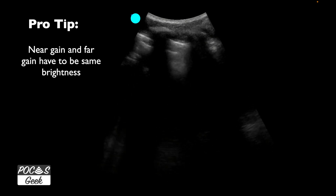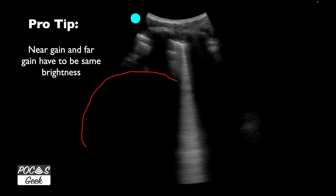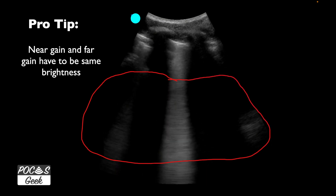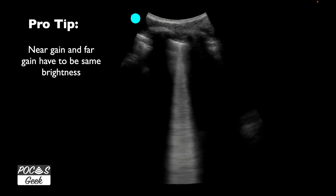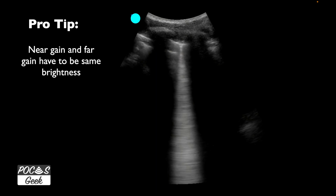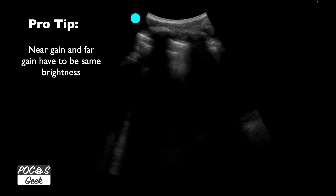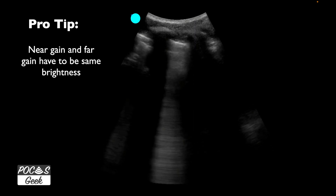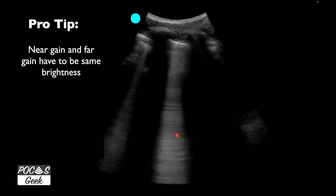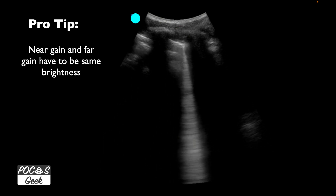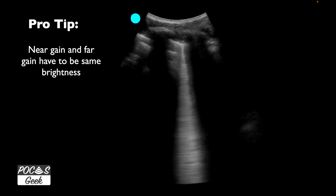If the far field of your screen is very dark, your machine may actually eliminate B-lines that are present because the gain settings are incorrect. You need to increase the far-field gain so it looks similar to the near-field brightness. Adjust using time-gain compensation, which is available on most machines, or near and far field gain if it's a point-of-care ultrasound machine.